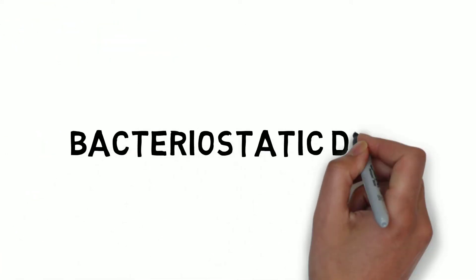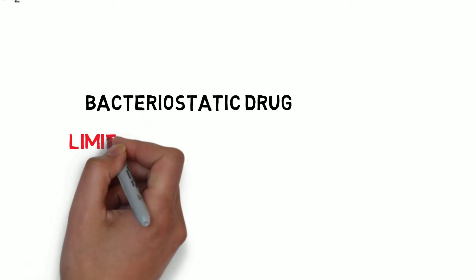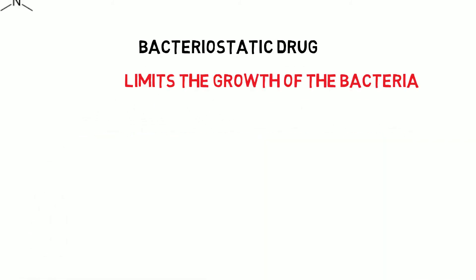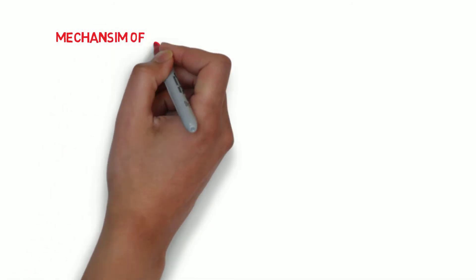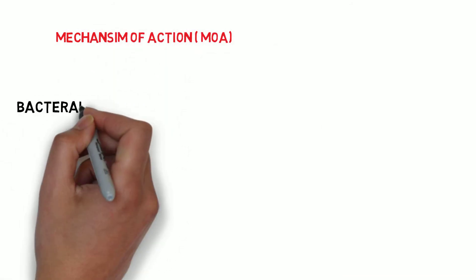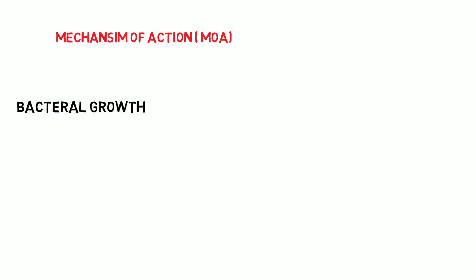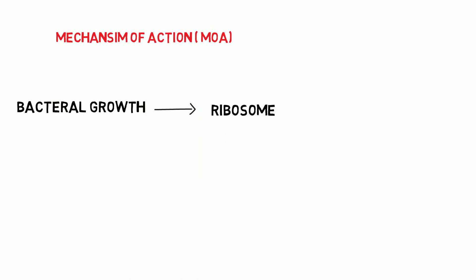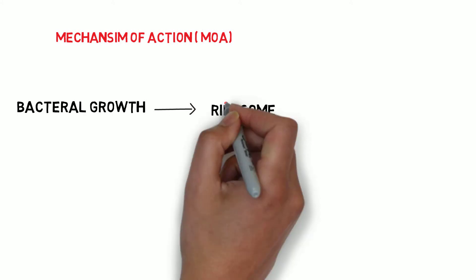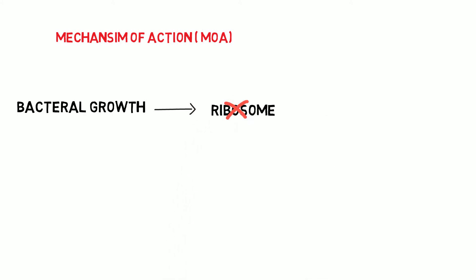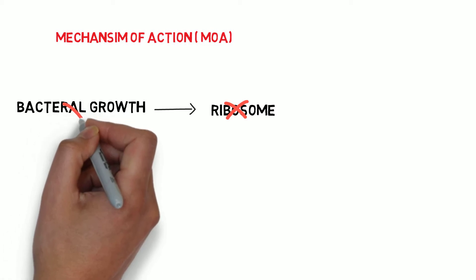Tetracycline is bacteriostatic, which means it inhibits the growth of bacteria. For the growth of bacteria, they require protein, which they get from a protein-forming organ called the ribosome. Tetracycline inhibits the action of the ribosome and ultimately inhibits the growth of bacteria.